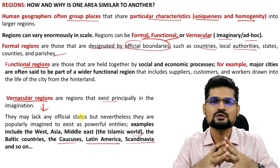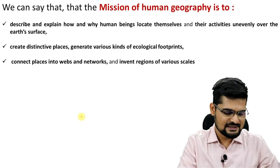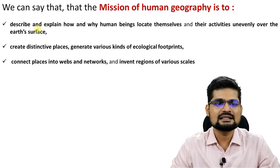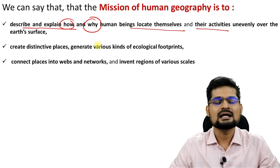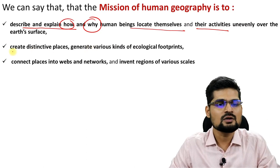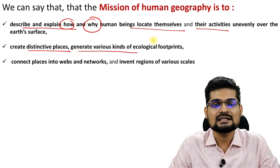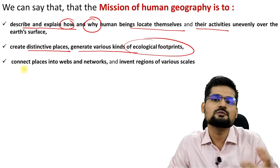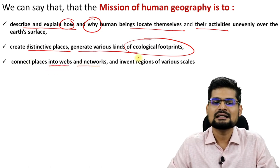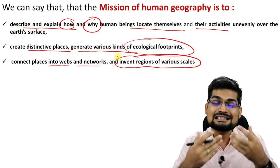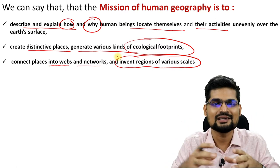What is the mission of human geography? After all, it's basically to describe and explain how and why human beings locate themselves in particular places, their activities, how they are distributed over space, what patterns they create. They also create distinctive places which are unique in nature, generate various kinds of ecological footprints — every place has a different footprint on ecology. They connect to places through webs and networks and invent regions at various scales. That's where you have the entire focus of human geography, or anthropocentric geography.